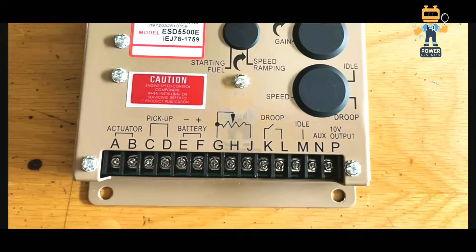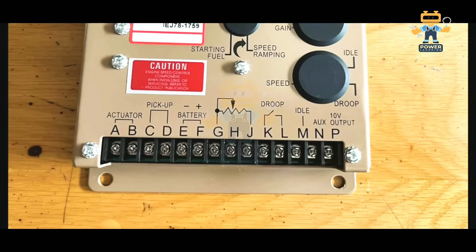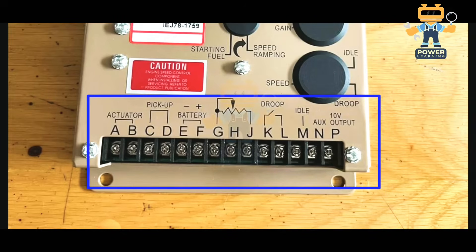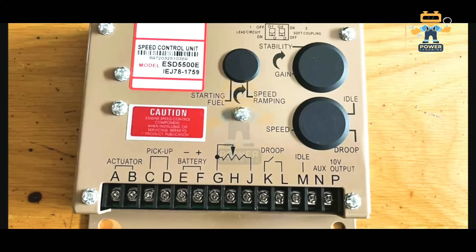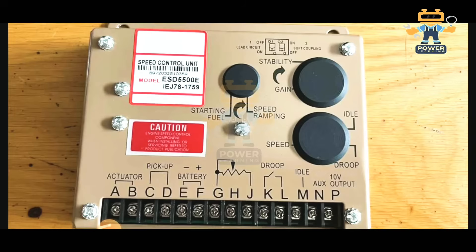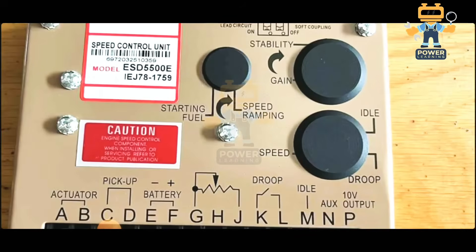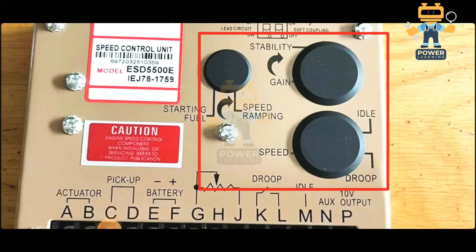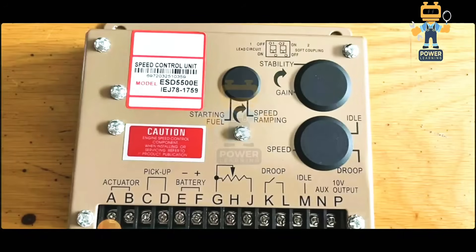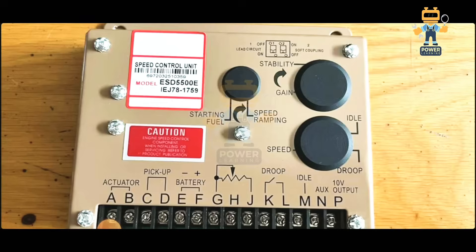First of all, here you see we have numbers starting from A, B, C, D, E, F, G, H, J, K, L, M, N, P. I will tell you all the functions of these terminals, how you terminate the wiring and how you control. As you see here, these three black rubber covers - under these covers we have DIP switches and also potentiometers for setting of the engine while it is running.